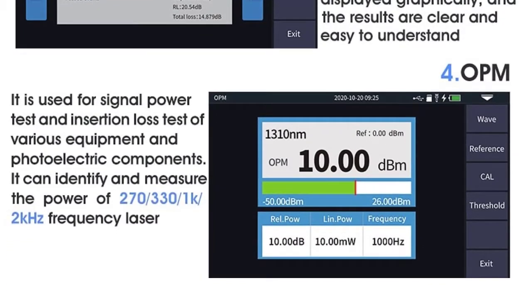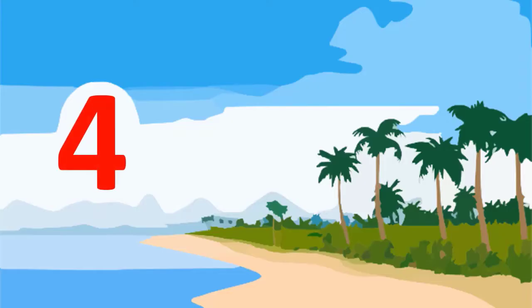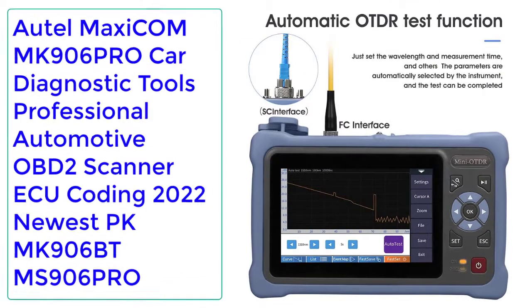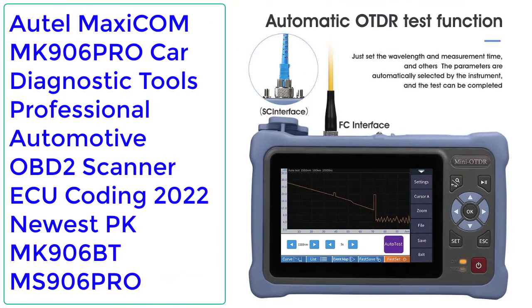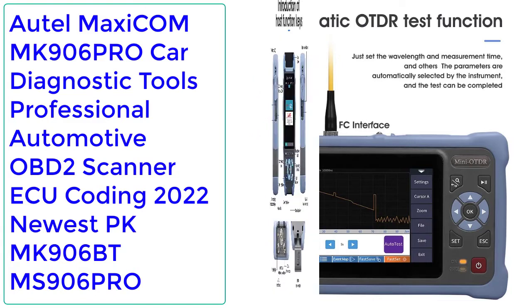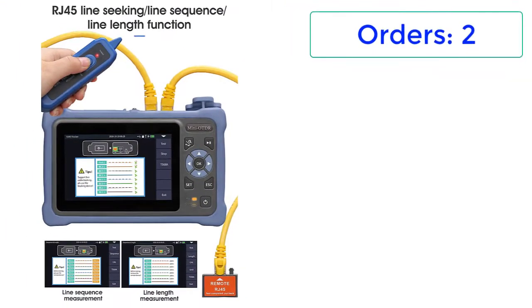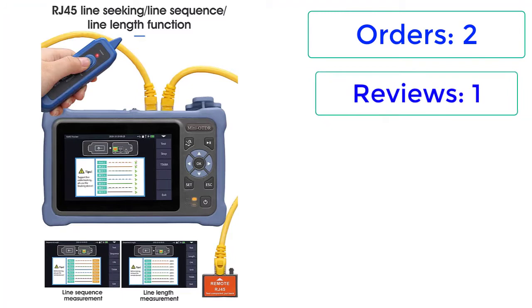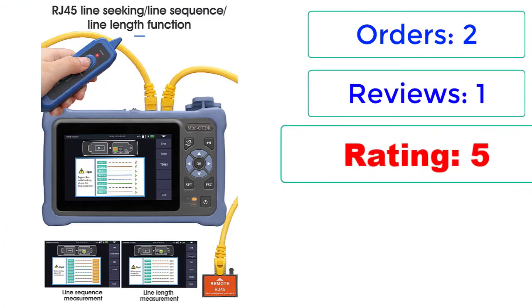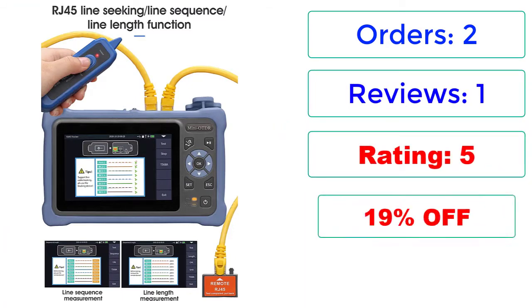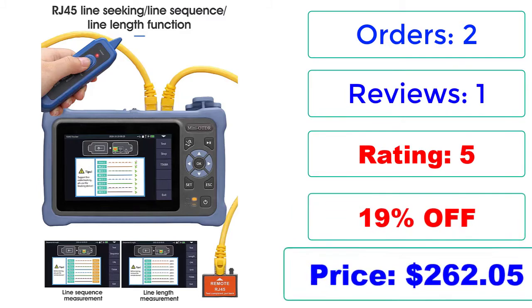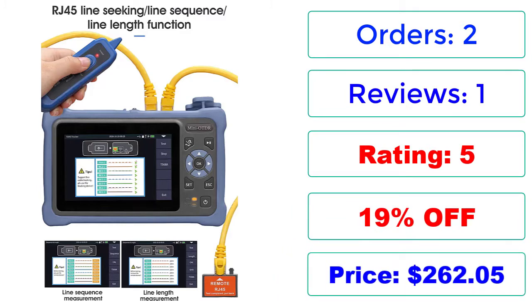Certification: None. Number 4 — Free Shipping Mini OTDR, 1310/1550nm, 26/24dB, fiber optic reflectometer with touch screen, VFL, OLS, OPM, Event Map, and Ethernet Cable Tester. Orders: 2, Review: 1, Rating: 5. Price: $262.05, 19% off.